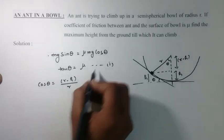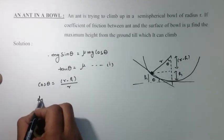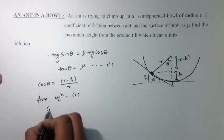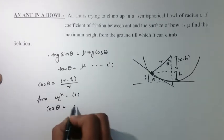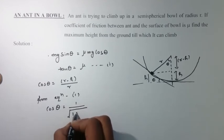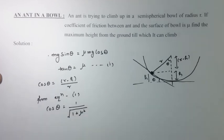And from equation 1, cos theta would be equals to 1 upon under root 1 plus mu square. Now put this value here, so we can find 1 upon under root 1 plus mu square equals to r minus h upon r.